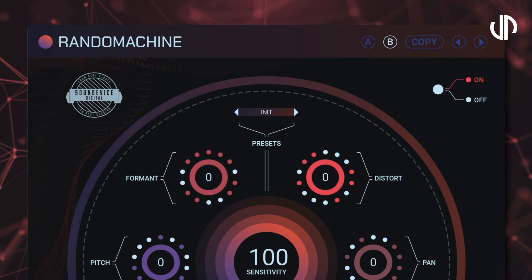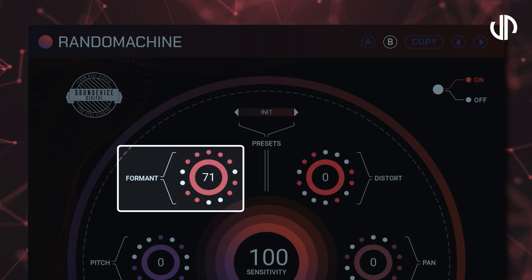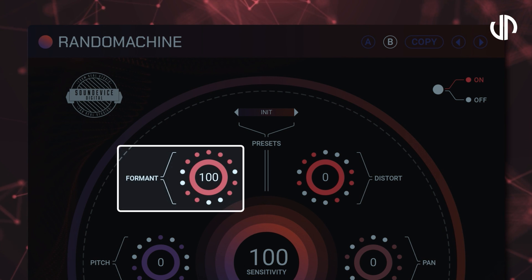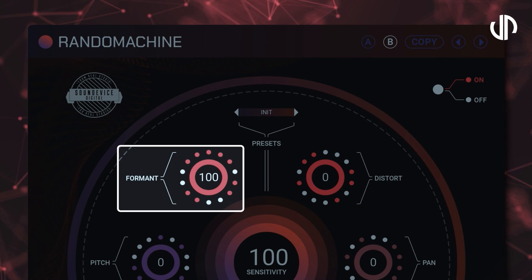Let's go through each of the parameters. Formant randomly changes the formants of the processed audio. This one messes with the character of the sound, giving it a different vibe.